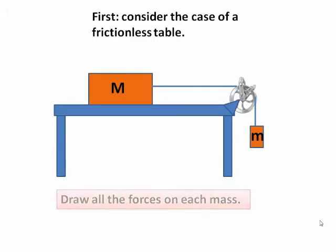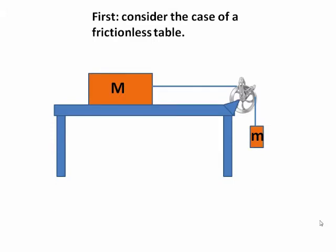So, the little mass m is obviously pulled downwards by gravity, so it has a weight, mg, pulling down.